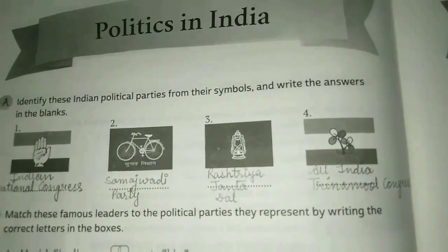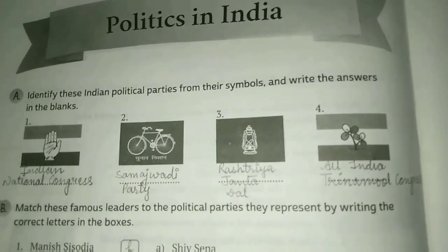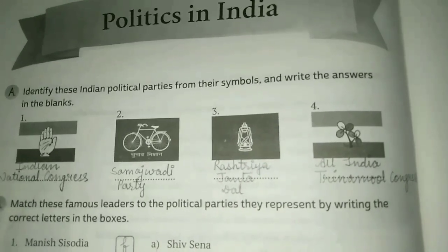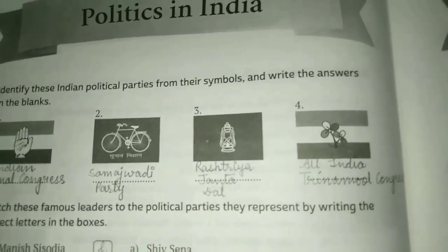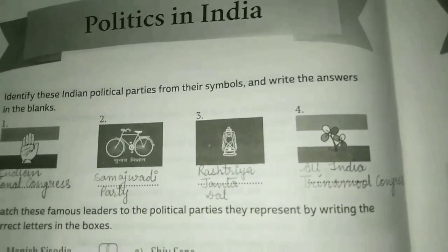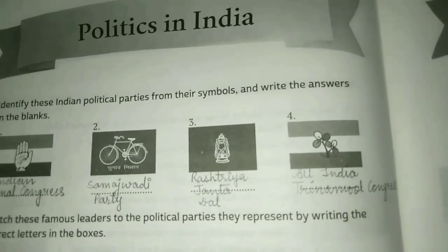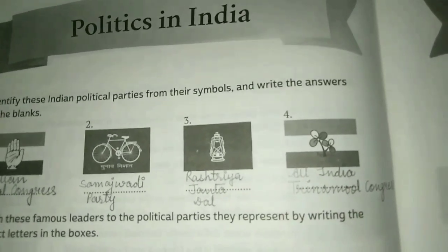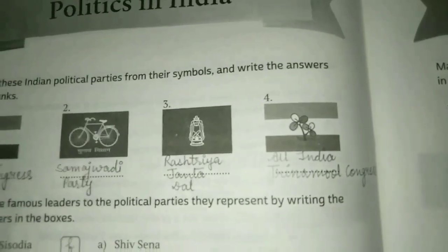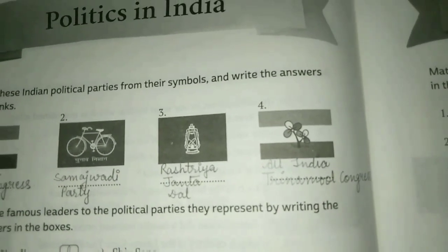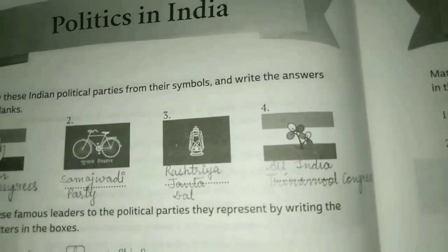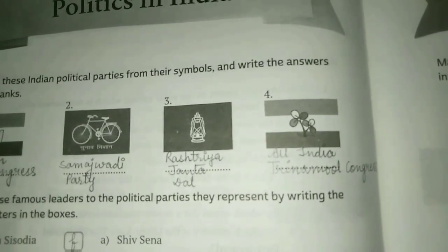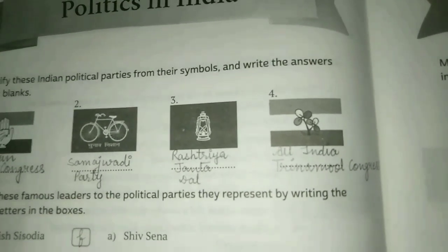The second symbol is of Samajwadi Party — it is a state party that has strong roots in the northern state of Uttar Pradesh. The third symbol is of Rashtriya Janata Dal — the party was founded in 1997 by Lalu Prasad Yadav. The fourth and last symbol is of All India Trinamool Congress — it is an Indian national political party mostly active in West Bengal, led by its founder and current Chief Minister of West Bengal, Mamata Banerjee.